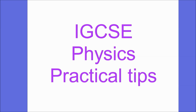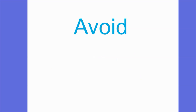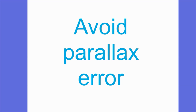The first thing I'm going to introduce are three words that should be your new best friends: avoid parallax error. Whenever you're asked about how you're going to measure things accurately, you can talk about avoiding parallax error. Parallax error is the error that occurs when you don't read a scale exactly at right angles to the scale — it's a bit wonky essentially.